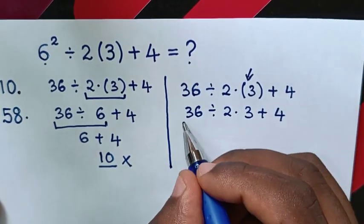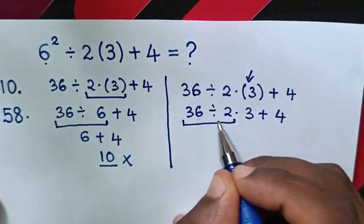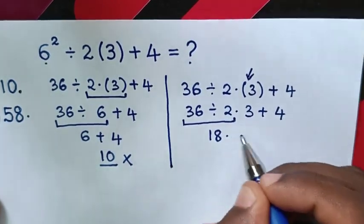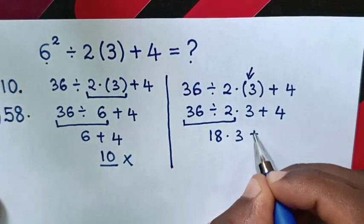Then, in the next step, we deal with division. So, 36 divided by 2 is 18, then times 3, then plus 4.